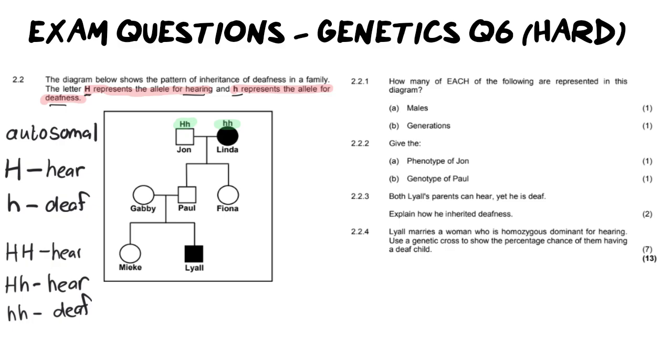Now Linda does have the disorder as we can see she's got two small h's and if I go in and fill in Lyle they will also have two small h's. Now we've got Gabby, Paul, Fiona and Mika and they all need alleles as well so I'm going to fill them in too. Now the fact that the rest of the family does not have the disorder means that everybody else in this picture must be at least one capital H. So I'm going to fill in that capital H for everybody.